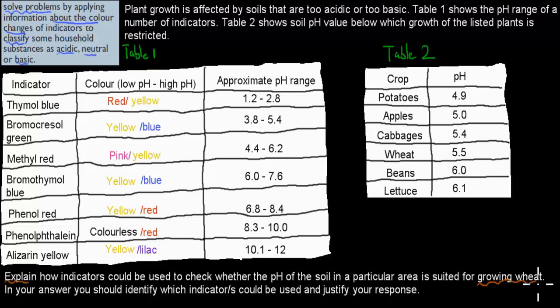We have to check and we have to explain how we can check if wheat could be grown. And wheat has an ideal pH right here of 5.5. So that's its ideal pH range. It wants to have a pH of about 5.5. And in your answer, you should identify which indicators could be used and then justify your response. So first, give a general statement of why could we use indicators to check if the optimum pH is there. And then say which one of these would be used in that example. And then we have to justify it. So we have to say why we would use it as well.